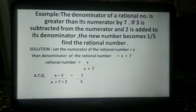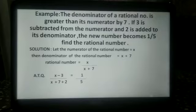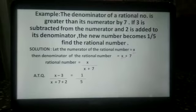In another example, the denominator of a rational number is greater than its numerator by 7. If 3 is subtracted from the numerator and 2 is added to its denominator, the new number becomes 1 upon 5. Find the rational number. Let the numerator be x. Then the denominator is x plus 7, and the rational number is x upon x plus 7.